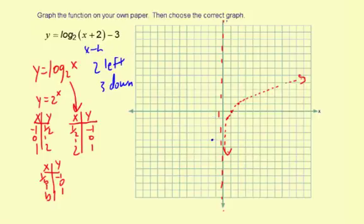The next point, 1, 0, 2 left, 3 down. The next point, 2, 1, is going to be 2 to the left and then 3 down.